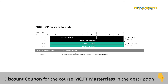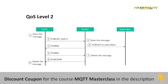The seventh packet is the PUBCOMP packet, also known as the publish complete packet. It is sent by the broker to the publisher only when the PUBREL packet is received from the publisher. Thus, the PUBREC, the PUBREL, and the PUBCOMP packets together enable the QoS level 2 feature of MQTT.